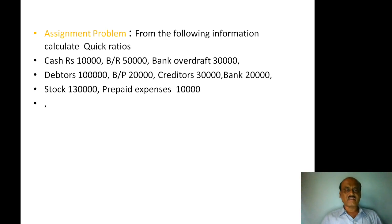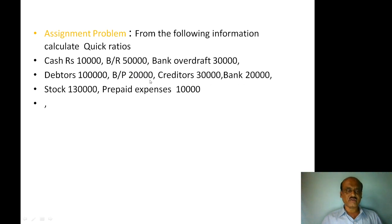Assignment Problem: From the following information, calculate the quick ratio — Cash: Rs. 10,000; Bills Receivable: Rs. 50,000; Bank Overdraft: Rs. 30,000; Debtors: Rs. 1,00,000; Bills Payable: Rs. 20,000; Creditors: Rs. 30,000; Bank: Rs. 20,000; Stock: Rs. 1,00,000; Prepaid Expenses: Rs. 10,000.